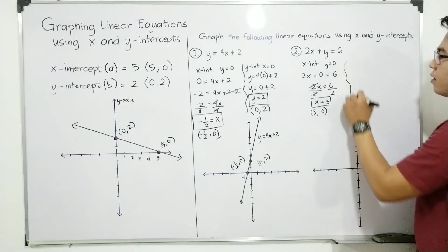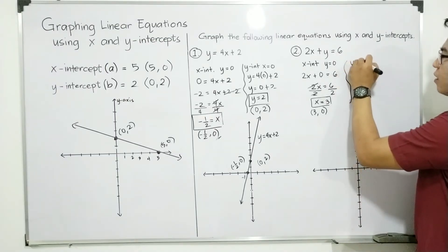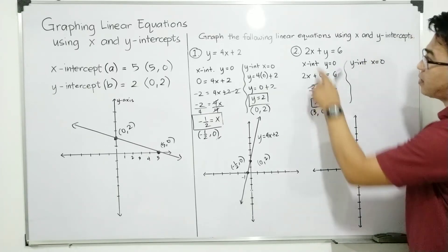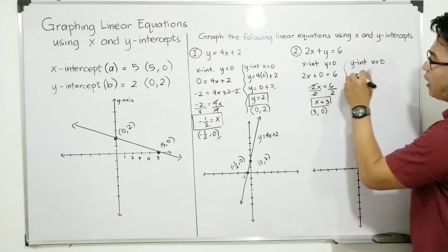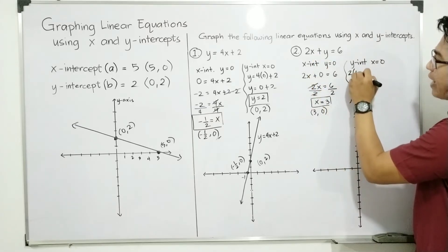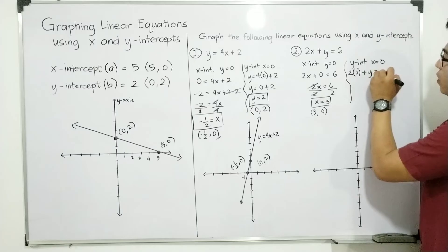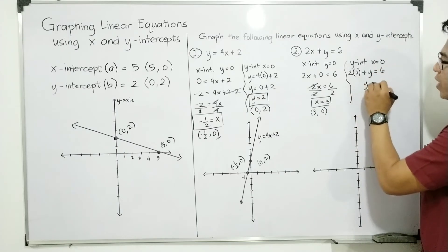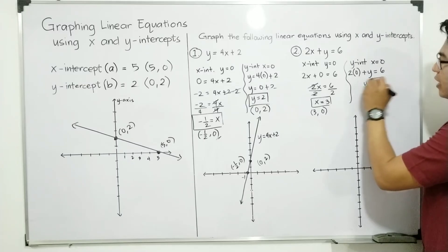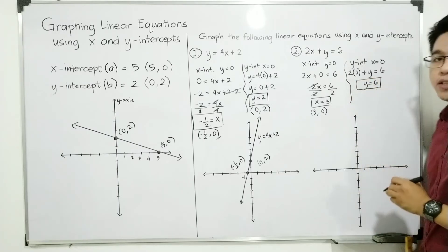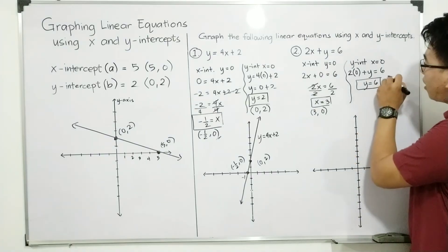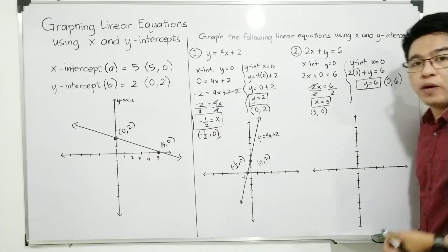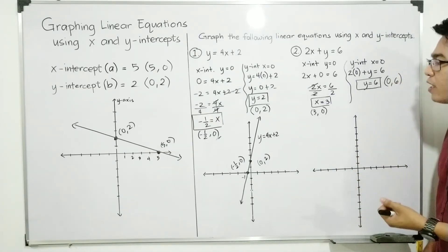As for the y-intercept, your x is equal to 0. Replacing x by 0: 2(0) + y = 6, which simplifies to y = 6. The coordinates of your y-intercept are (0, 6). Now we are ready to graph or plot the x and y-intercepts.